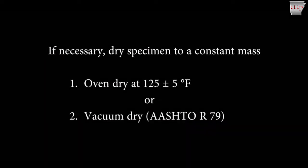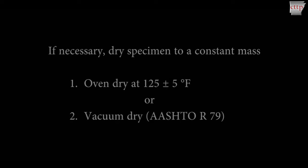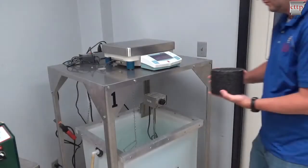Recently compacted laboratory specimens do not require drying. However, samples that have been exposed to moisture should be dried to a constant mass by oven drying at 125 plus or minus 5 degrees Fahrenheit, or by vacuum drying according to AASHTO R-79. Cool the specimen to room temperature.